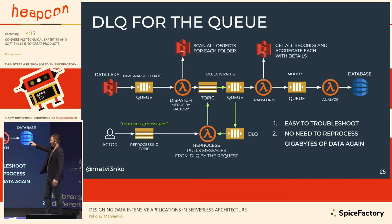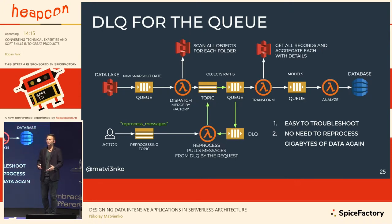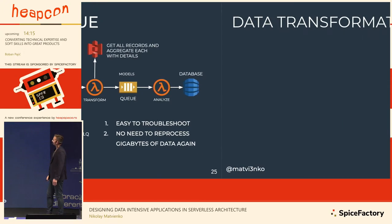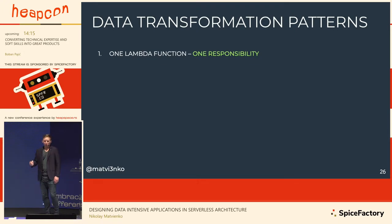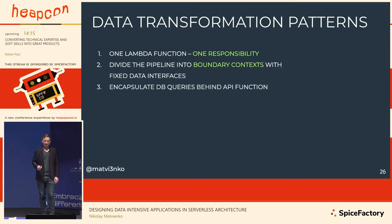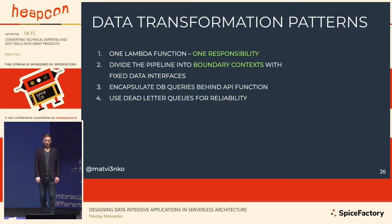That's how our pipeline and the controlled reprocessing loop looks. It's easy to troubleshoot: when working with microservices you lose data and have to search logs, but here you keep failed messages in persistent storage like a queue. You can come back anytime, look at the messages, understand how to fix the data, and easily reproduce the error locally. Key principles for transformation: one Lambda function, one responsibility; divide the pipeline into bounded contexts; encapsulate database queries behind an API function to reduce connections; use dead-letter queues to protect data reliability.